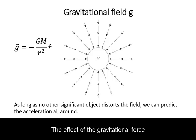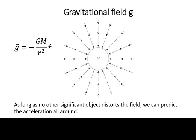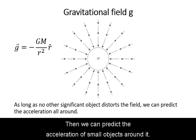The effect of the gravitational force can also be represented as a gravitational field. In predicting the motion of a satellite around Earth, we only need to take into consideration the mass and shape of the Earth. Then we can predict the acceleration of small objects around it.